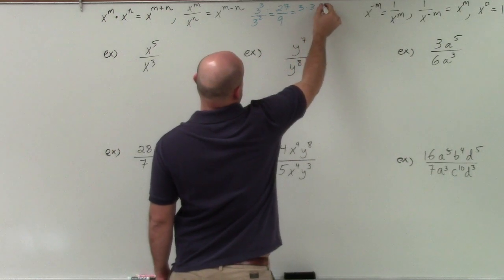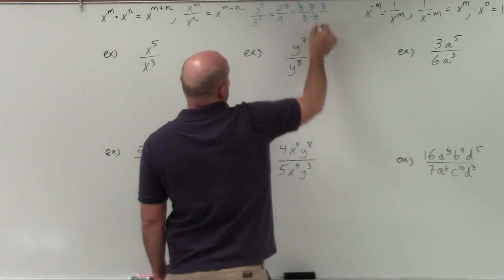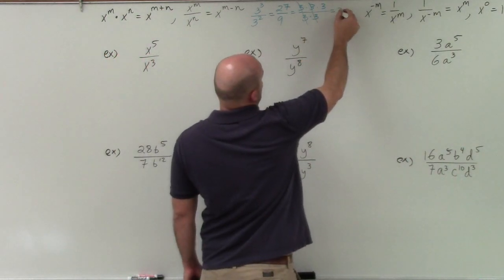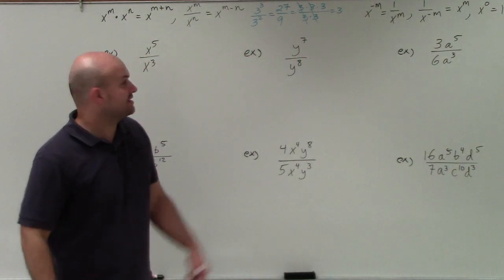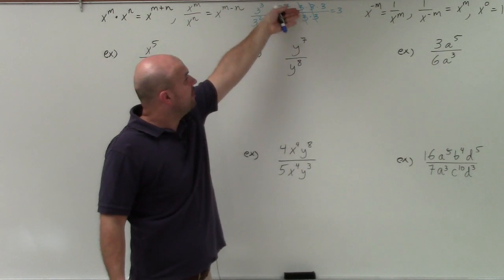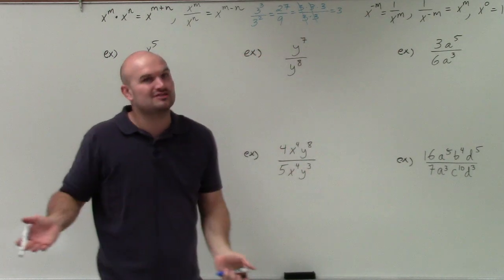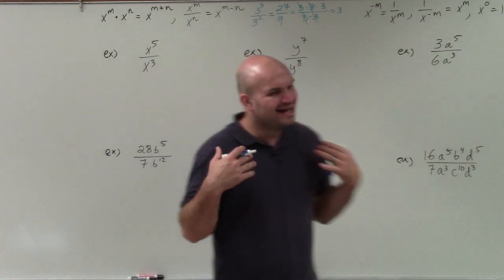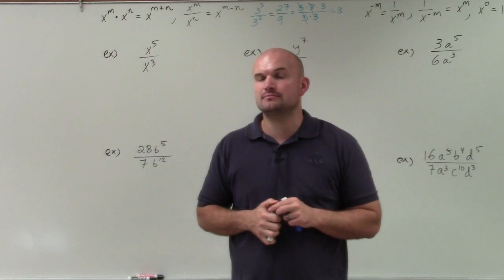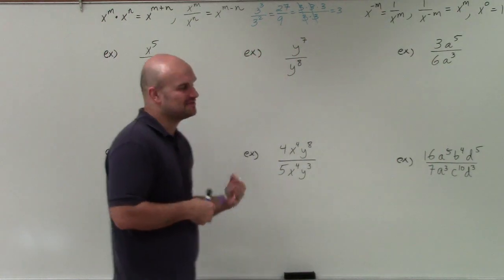You could also do 3 cubed as 3 times 3 times 3, divided by 3 squared, which is 3 times 3. Using the quotient property or the division property, you can see the answer is equal to 3. You could multiply them out and simplify, use the expression, or multiply them out with their powers — they all give you the exact same result. So again, whenever we are dividing exponents with the same base, we're going to subtract the powers.